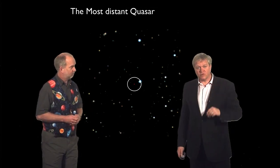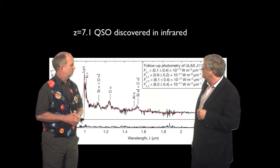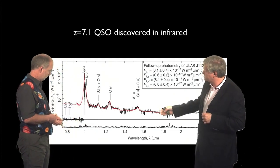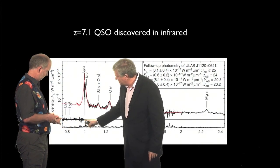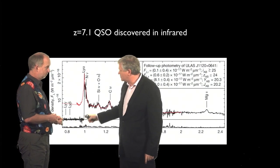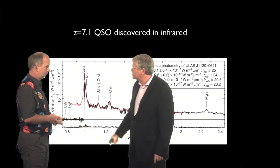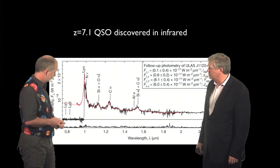So we can take a spectrum of this with a very big telescope, and what do we see? Well, we see a normal quasar, and then wham! Below that magic 10.2 electron volts, nothing.